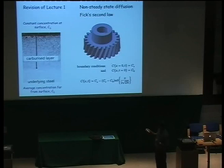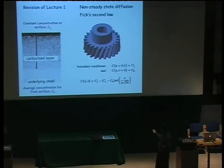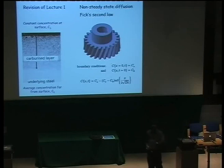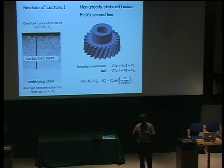This process is called carburization. The concentration at the surface is maintained constant, so we use the error function solution. The concentration remains constant at the surface, and you can work out the depth of penetration of carbon using that equation. The boundary conditions are that you maintain a constant concentration at the surface, and the concentration far away is the average carbon concentration of the steel before carburization. There are many cases like this — not just for gears, but for many components where you're diffusing things into the surface to change surface properties.